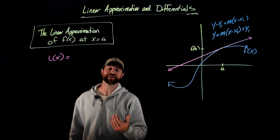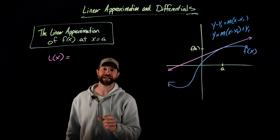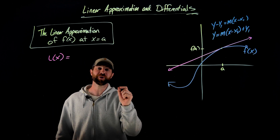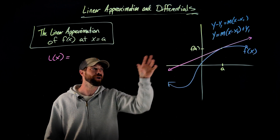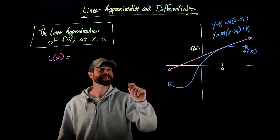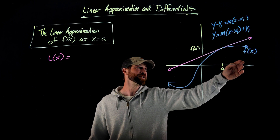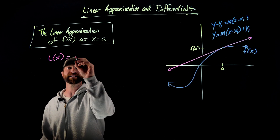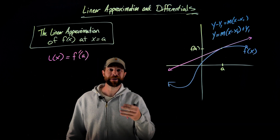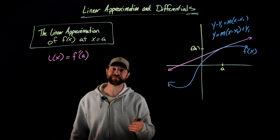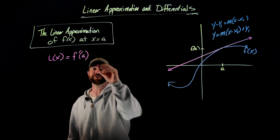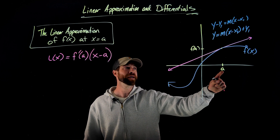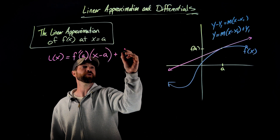The linear approximation of the function f of x at x equals a, denoted by L of x, uses derivatives and function notation for all values. m is the slope of the tangent line — the slope of the tangent line at x equals a is f prime of a by definition. We multiply that by x minus a. Finally, we add the y value at that point, which is f of a.